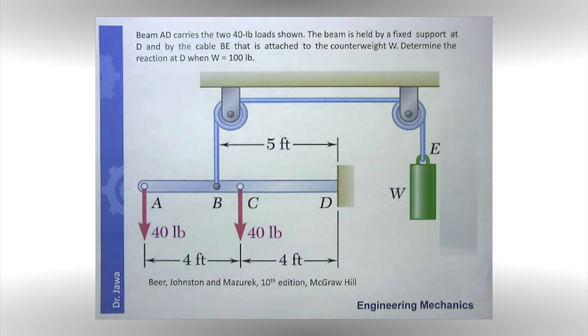And this problem, as you can see, involves a beam that is actually fixed. So what we have here is a built-in support, a fixed support, meaning you will have three support reactions: a reaction along x and y axis as well as a moment, a couple moment reaction, correct?